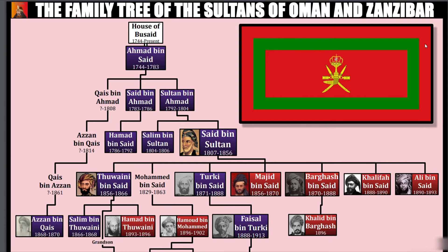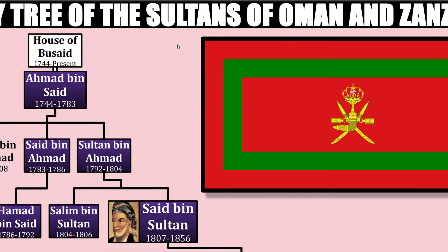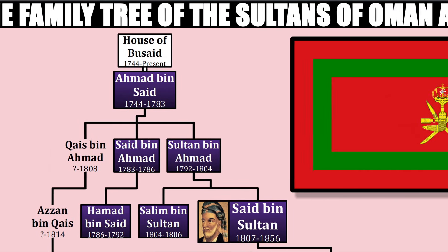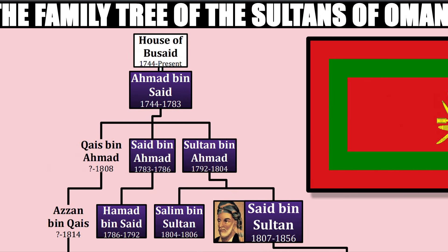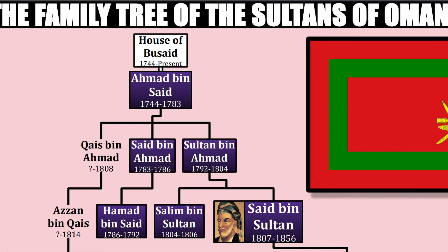A little background: this family tree only starts with the founding of the House of Al-Busaidi in 1744 or 1749 — we'll get into that. However, before that, the Imamate of Oman ruled over the peninsula for around a thousand years starting in 751. If you would like to see the family trees of those earlier dynasties, let me know in the comments.